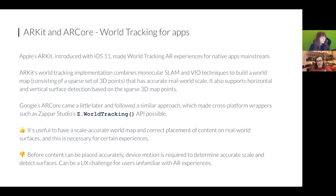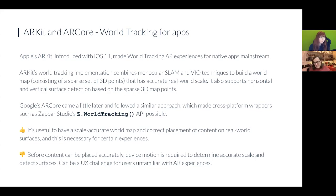Because ARKit and ARCore expose a similar model for how their tracking works, we were able to build a wrapper API inside Zappar Studio — that's our world tracking API. With that API you can publish content scannable in the Zappar app or in native apps with the Zappar embed component. It's great to have absolute scale for a lot of experiences; for example it's crucial if you're trying to answer questions about whether a piece of furniture would fit in a room. The downside is that with only one camera, you need some camera motion before you can start placing content in the right place in the world.